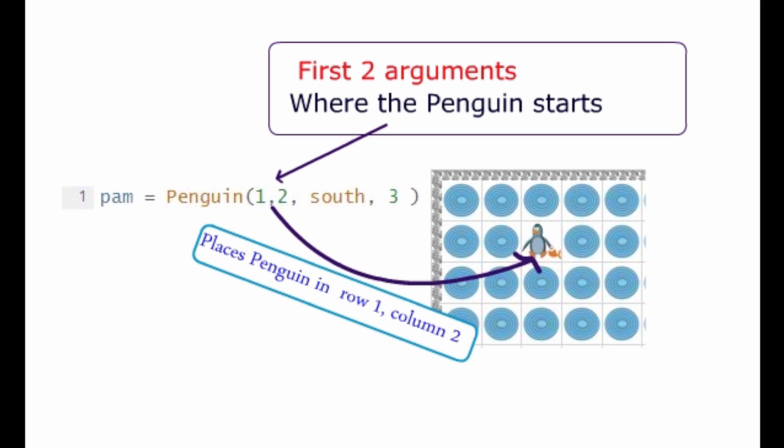So now instead of the default 0, 0, facing east with no fish, pam is at row 1, column 2, facing south with 3 fish. And those specifications are arguments.